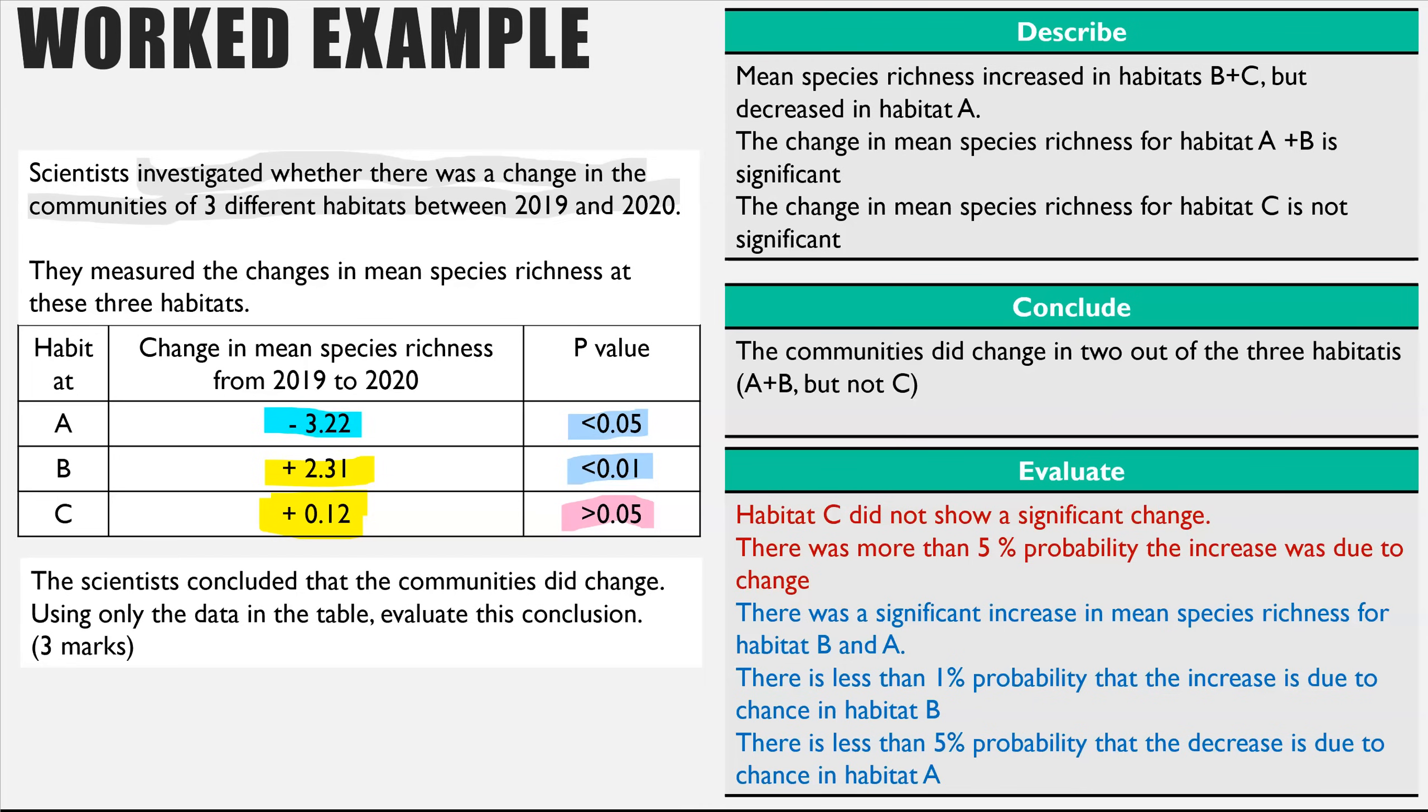Now the actual exam question linked to this is, the scientists concluded that the communities did change. Using only the data in the table, evaluate this conclusion. And now because I've already done all of this, I can just lift this information from the evaluate box, and that would be my three marks straight away. So that's one of the advantages. It then makes answering the questions a lot quicker, because you've already done the legwork at the beginning. It also means you've got a better understanding of the method, what they were trying to find out, and what the results show. So you're more likely to give an accurate answer, and a better understood answer, and therefore your clarity would have improved.